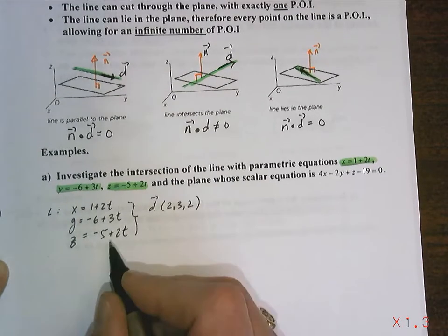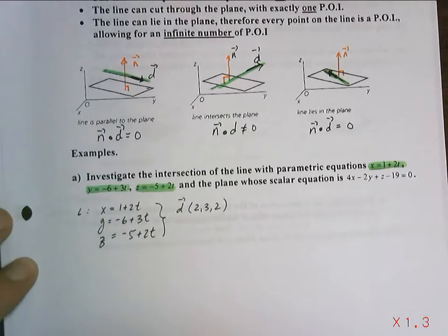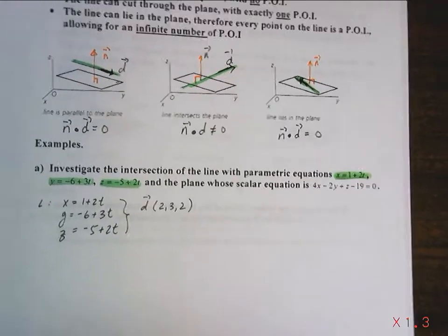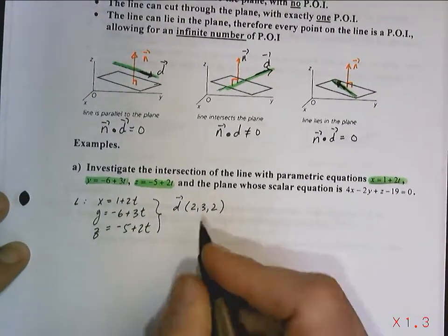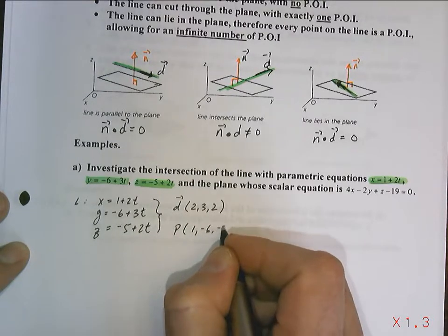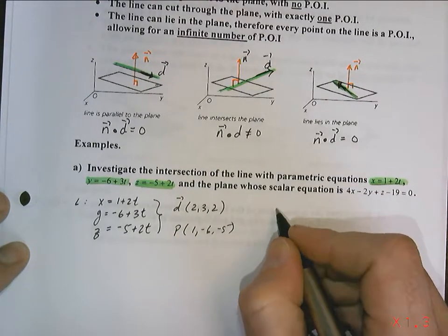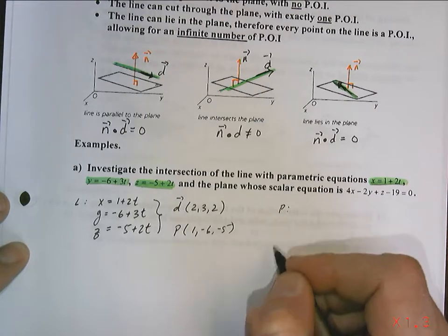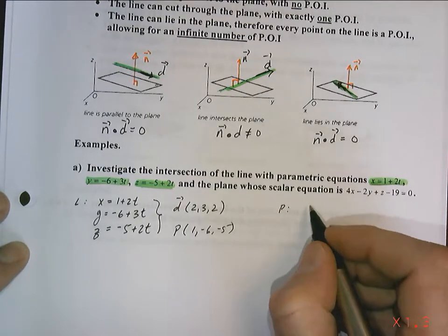And I can also pull off the point if that's going to be useful. I'm just going to adjust this a little bit. And the point is actually going to be 1, negative 6, negative 5. Now for your plane, your plane, they give you the scalar equation.